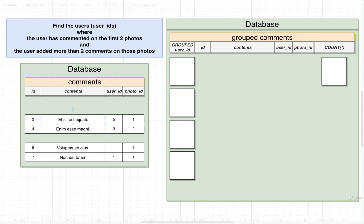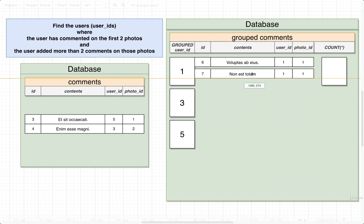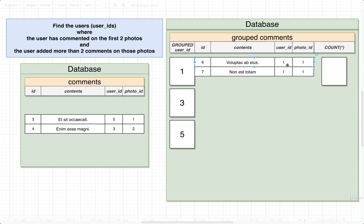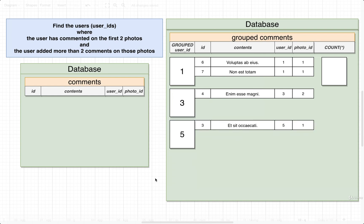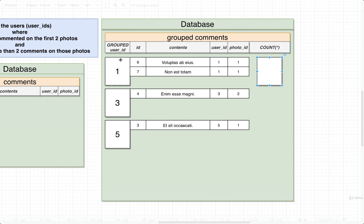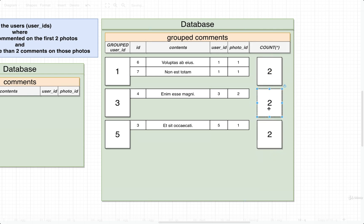Now we're going to group all these things together based on the user ID. It looks like we have user IDs of one, three, and five — those are our unique user ID values. We assign each row to one of these groups based on their user ID. The first two rows go into the first group with user ID one. The next has a user ID of three, and then a user ID of five. We then count up the number of rows in each group using a COUNT(*). This group has two entries, and then we have one and one.